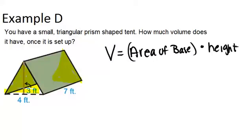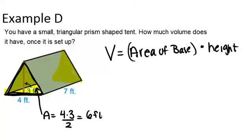Since our base is a triangle right here, we know that the area of a triangle is base times height divided by 2, where base in this case means this edge right here. So the area of this triangle will be 4 times 3 divided by 2, because the base and the height are 4 and 3. So that gives us 6 feet squared. So the area of the base is 6 feet squared.